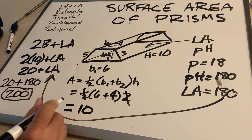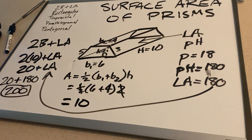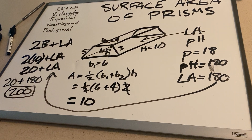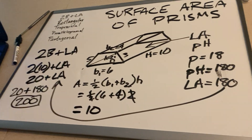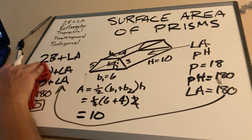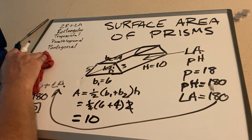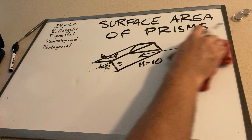We can substitute that in: we get 20 plus 180, which is 200. 200 is the surface area of that trapezoidal prism. Let's talk about one more.